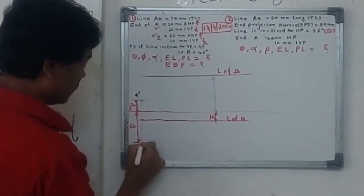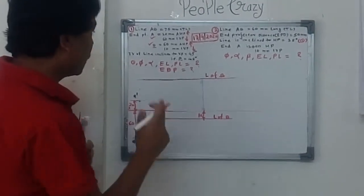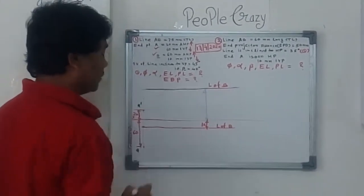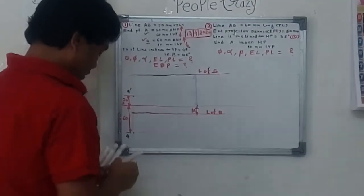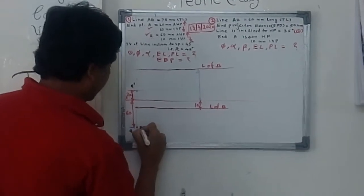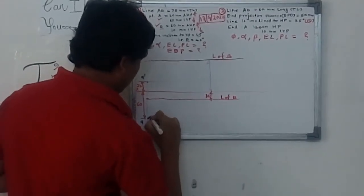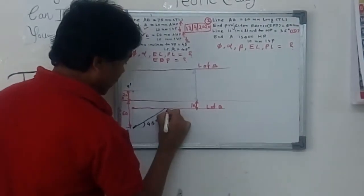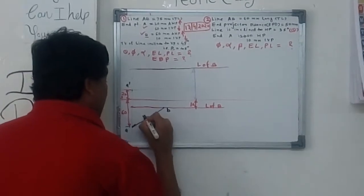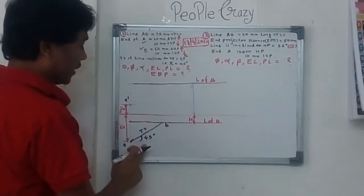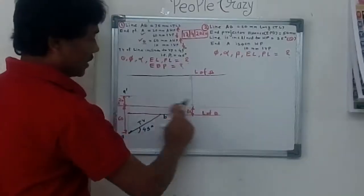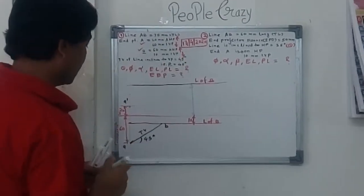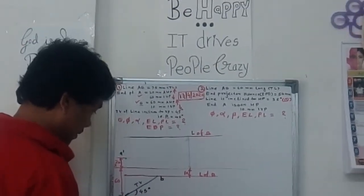Beta always goes through point A. We will draw the 45 degree line in this direction because point B is just 10 millimeters in front of VP. From this point we draw a line at an angle of 45 degrees. This 45 degree angle gives you the top view, and where it cuts the locus of point B gives you point B. This angle is the beta angle.